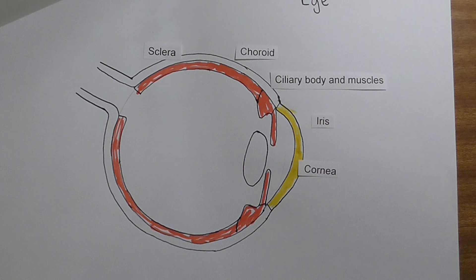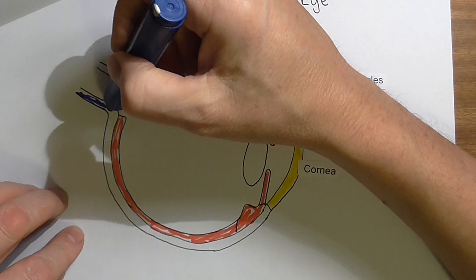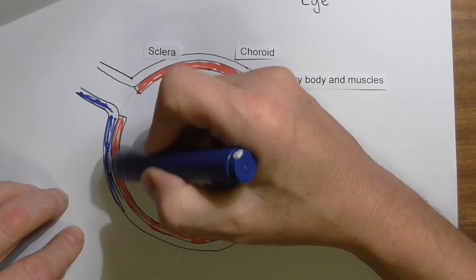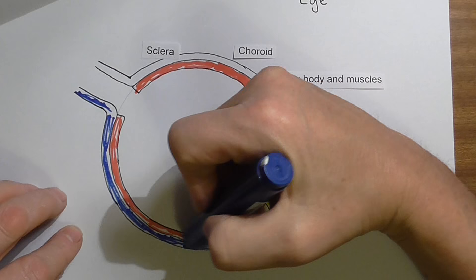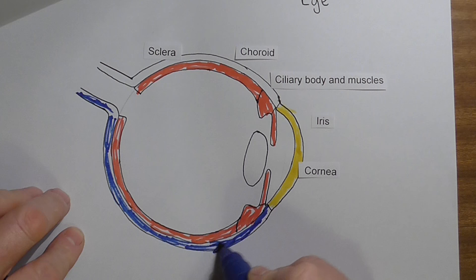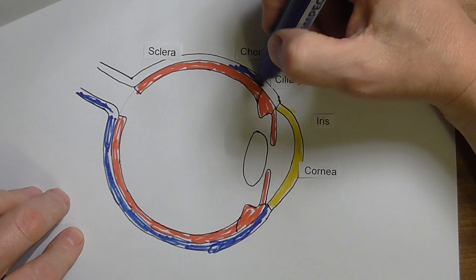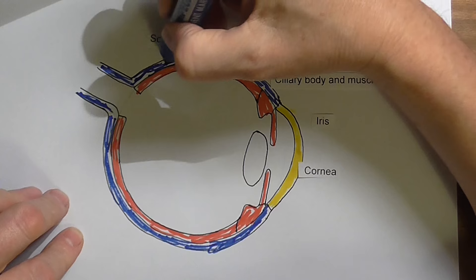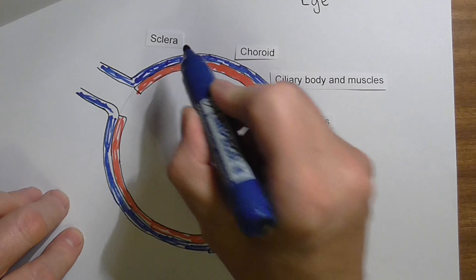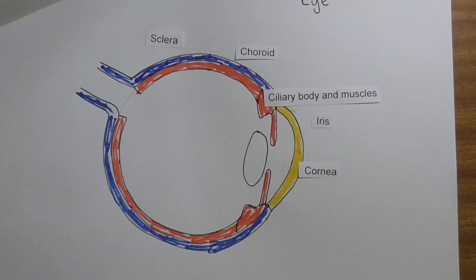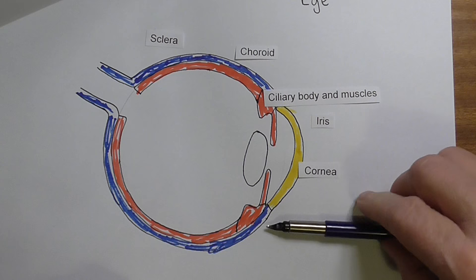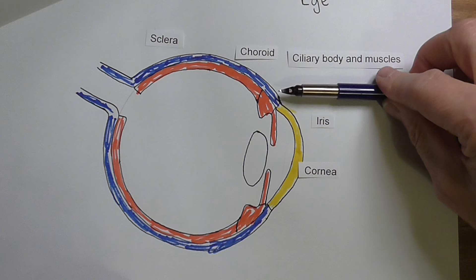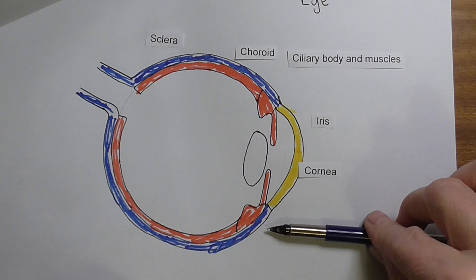The rest of the sclera we'll colour in blue — this is the fibrous tissue covering the optic nerve, and this bit gives a lot of the structural support to the eyeball because it's fibrous. It is completely continuous with the cornea; it's just that the cornea is transparent whereas this bit is opaque. Looking at the front of the eye, this will be the white of the eye that you see — the clear cornea, then the white of the eye on either side.